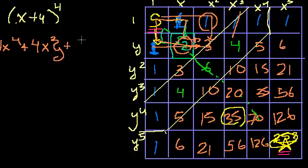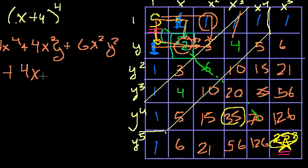Then you say plus 6x squared, y squared. And then we're at plus 4xy to the third. And then finally plus 1y to the fourth times just a 1 or an x. You might say, that's amazing, Sal. How did that work?